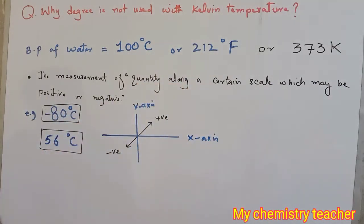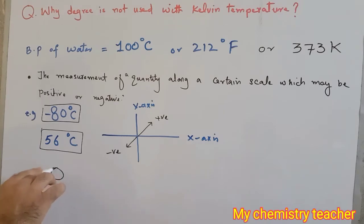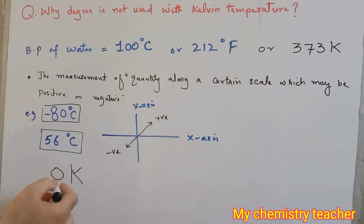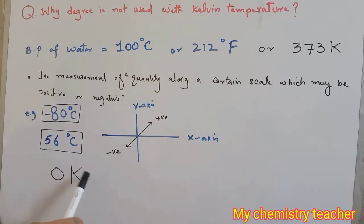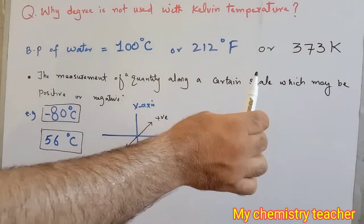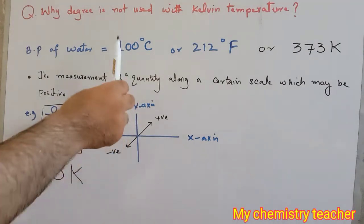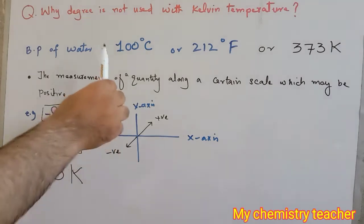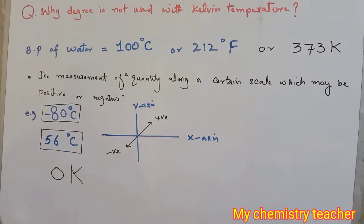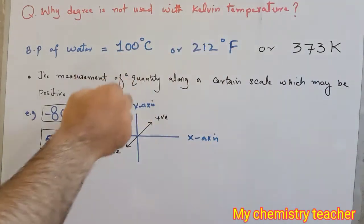But this is not the case with Kelvin. Whenever we represent Kelvin temperature, the lowest possible value is 0 Kelvin, and even 0 Kelvin has not been achieved yet. Going into negative is impossible, so all values of temperature in the Kelvin scale are positive only. Things that can only have positive values cannot be represented by degree — that is why we do not use degree with Kelvin, while degree Celsius and degree Fahrenheit use degree because these two can have both positive and negative values.